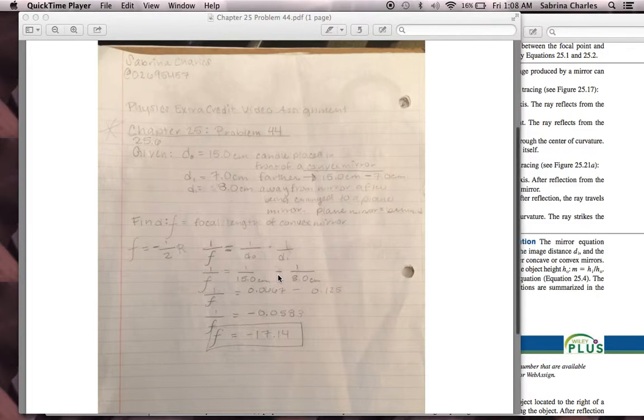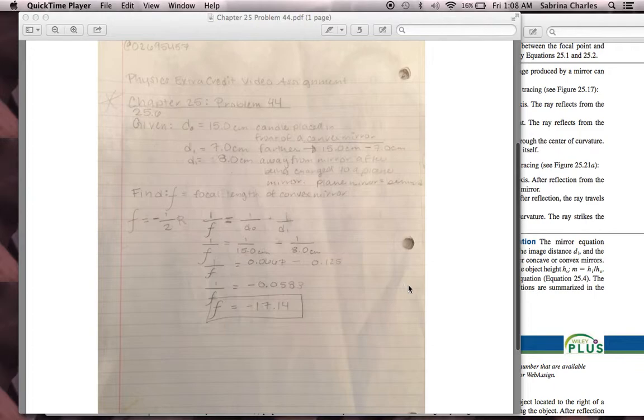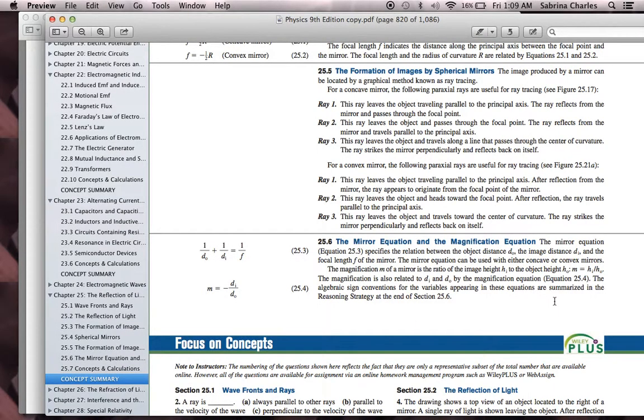We use the formula from 25.6: 1 over D sub 0 plus 1 over D sub I equals 1 over the focal length.